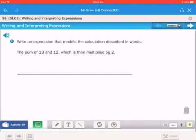This is for page 26. Again, you can do this on your own if you'd rather, or you can do this along with me right here. It says, write an expression that models the calculation described in words. The sum of 13 and 12, which is then multiplied by 2.